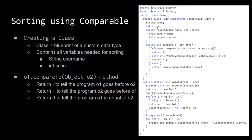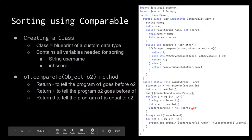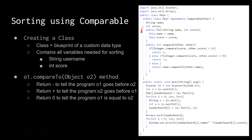Here you would declare the data that you want to use — String name and int score. These are going to be parts of a Pair. And this is something called a constructor — it tells Java how to create a Pair. You have to pass in a String name and an int score.